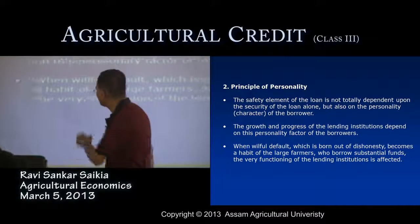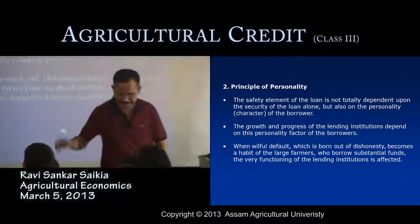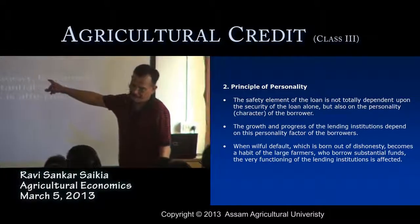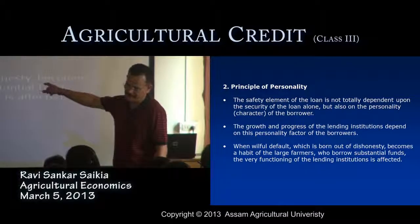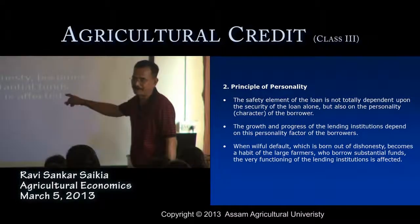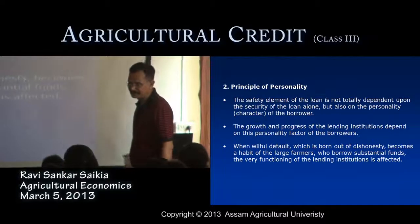Willful default comes due to the bad character or bad morality of the farmer — dishonesty and bad habits of borrowers adversely affect the functioning of lending institutions. To lower the mounting of overdues, banking organizations check the personality of the borrower and their personal record before disbursing the loan.